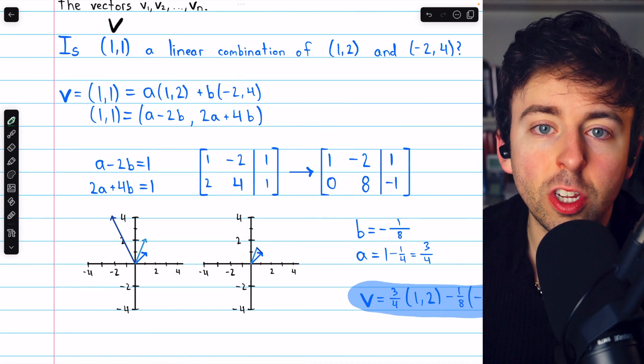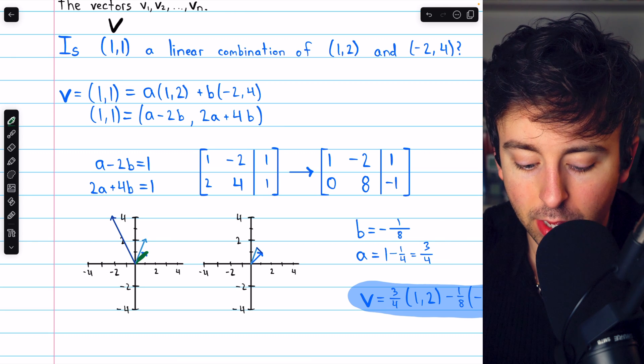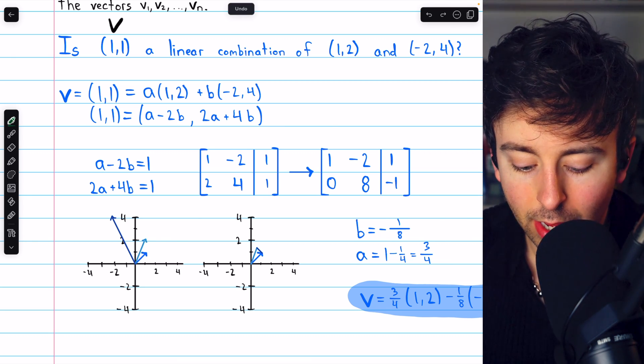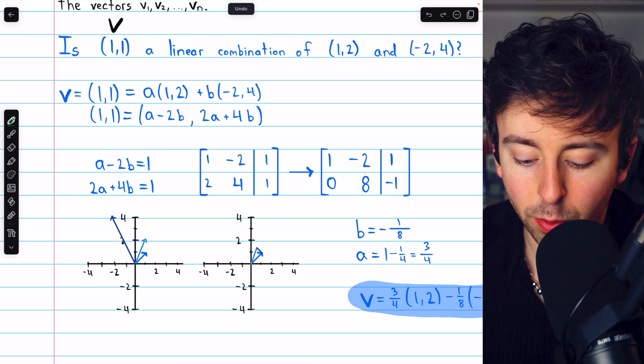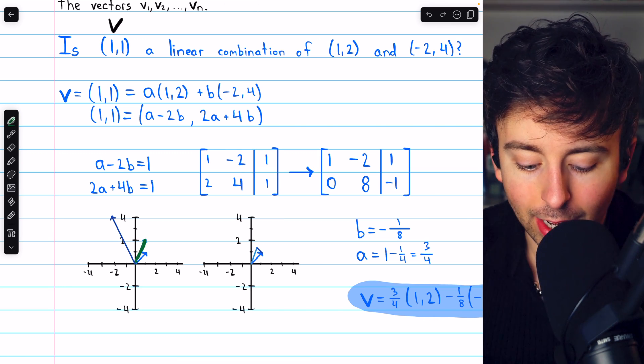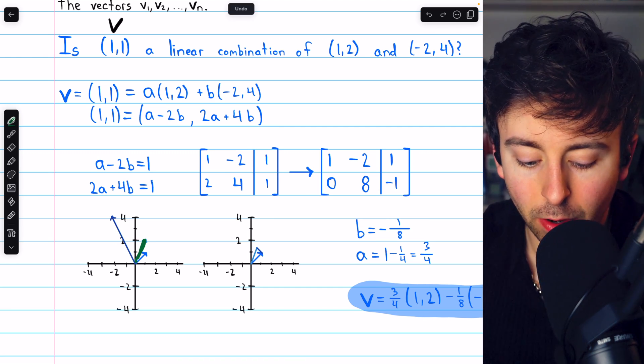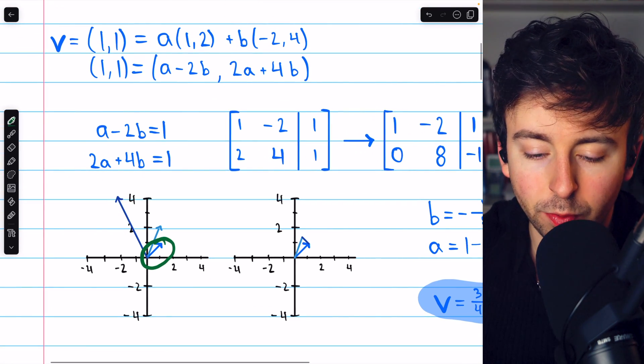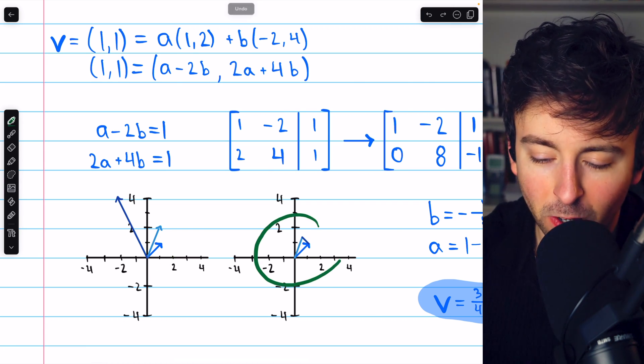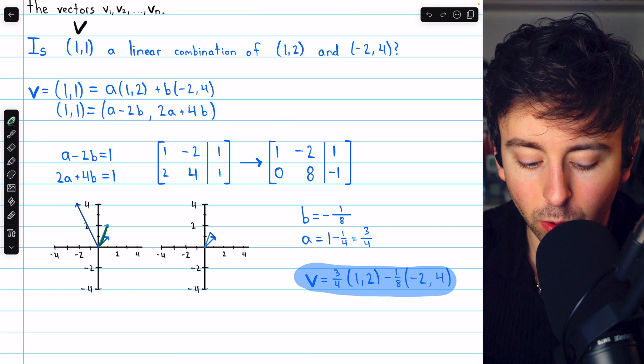Let's take a quick look at this geometrically. Here are the three vectors we started with. That's the vector v, (1,1). This is the vector (1,2). And this here is the vector (-2,4). And we've just seen that by multiplying these two vectors by the correct scalar and adding them together, we are able to get this vector v, the vector (1,1).